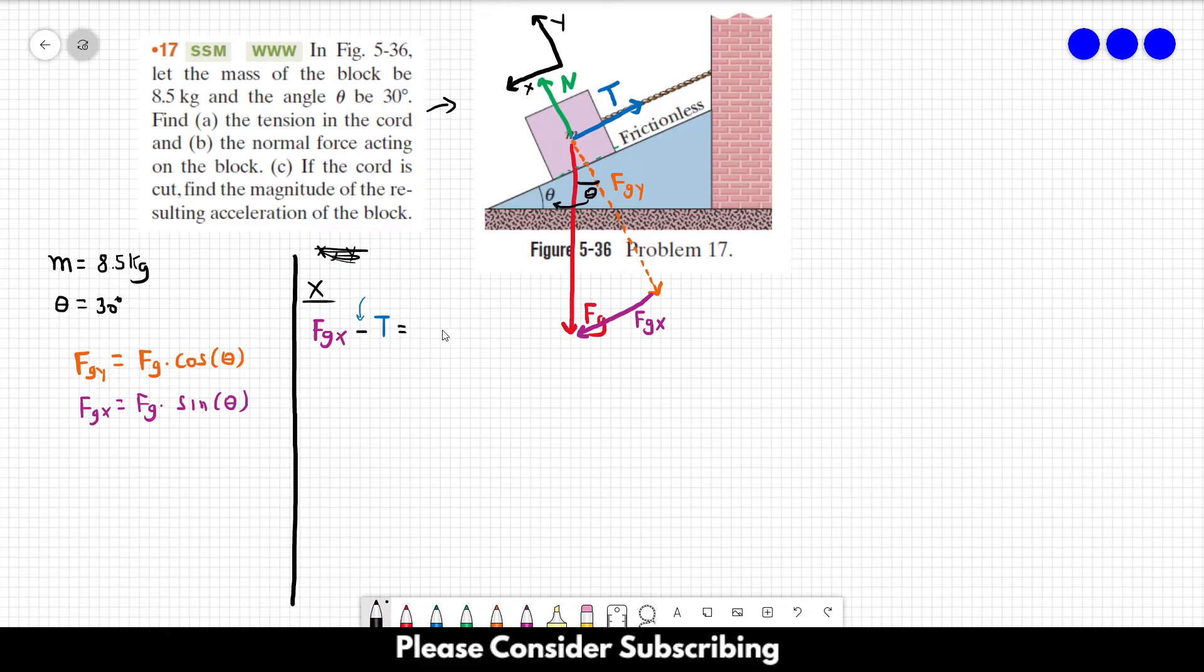And this is equal to the mass times the acceleration in the x-direction. However, we know that in this case the acceleration is zero because the chord is holding the mass, but let's keep it as a_x for now. In the y-direction, we have the normal force which is in the positive y-direction.